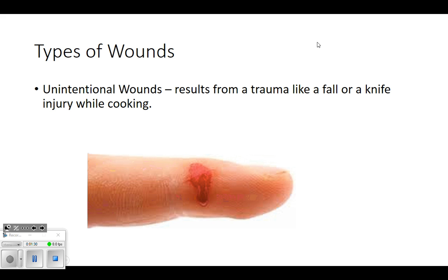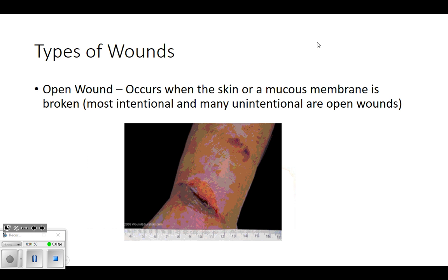Unintentional wounds could be cutting yourself while cooking - some kind of accident or trauma. In long-term care, one that's pretty common is a skin tear. You see a lot of skin tears or bruising - just ones that weren't intentional. Those are kind of common sense; you can think about the difference between the two.